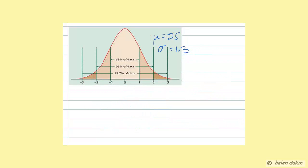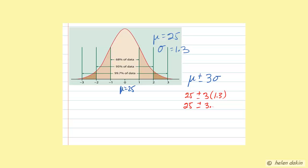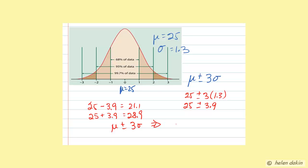The last question asks us to state the lifespan for batteries within mean plus or minus three standard deviations. The mean is 25 hours and the standard deviation is 1.3. So mean plus or minus three standard deviations means 25 plus or minus 3 times 1.3, which is 3.9. The lower limit is 25 minus 3.9, which is 21.1, and the upper limit is 25 plus 3.9, which is 28.9. So mean plus or minus three standard deviations gives a range of 21.1 to 28.9 hours.